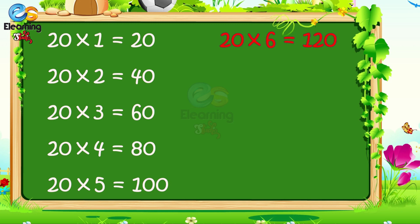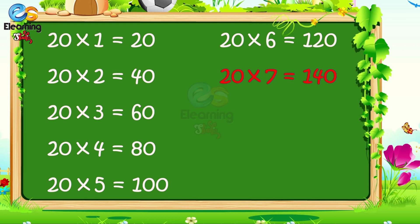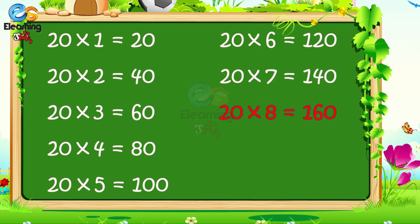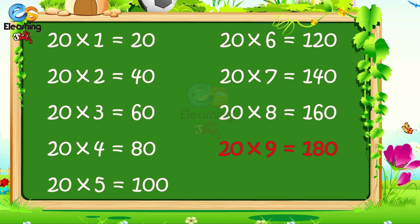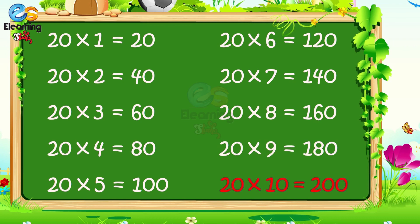20 times 7 is 140. 20 times 8 is 160. 20 times 9 is 180. 20 times 10 is 200.